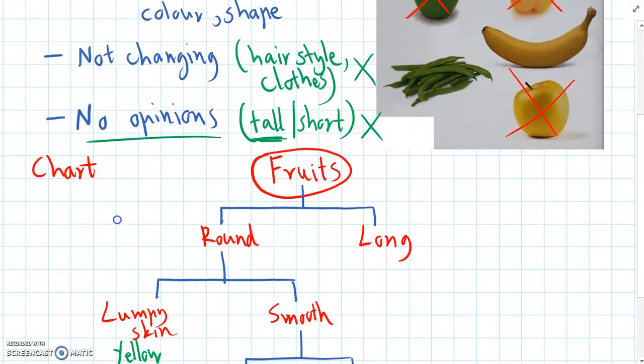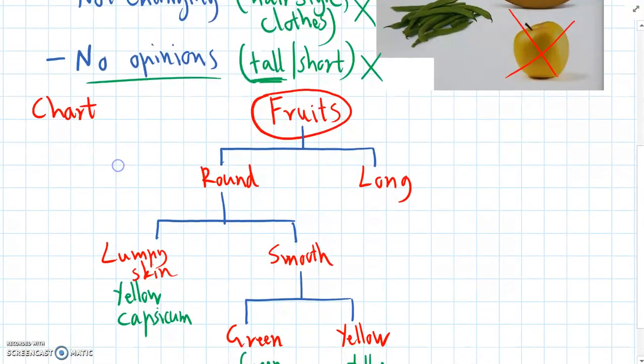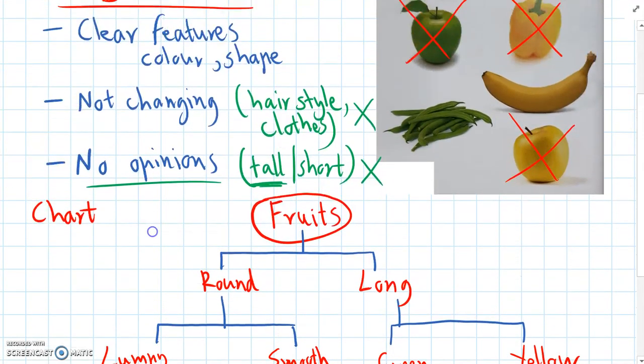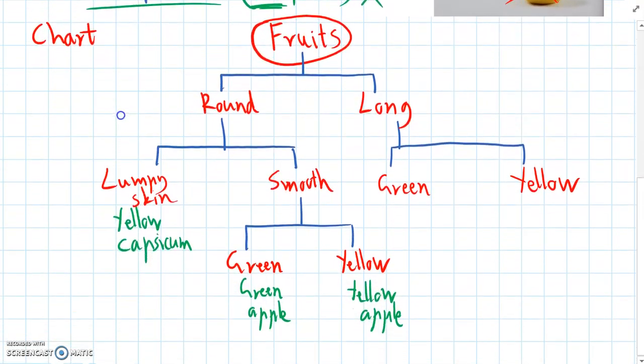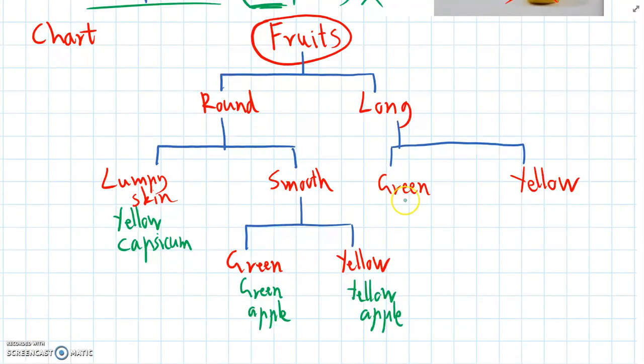And again, I think color will be the easiest question to ask here. So in the long category, we'll ask green and yellow once again. The beans are green and the banana is yellow. So we've finished classifying all of the fruits. And we'll write beans and banana at the bottom of the branch.